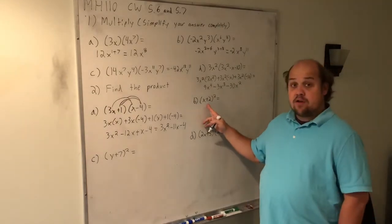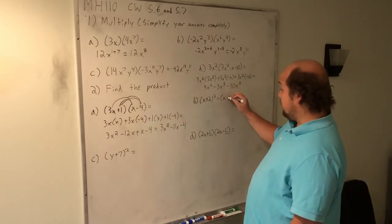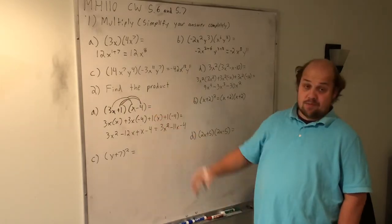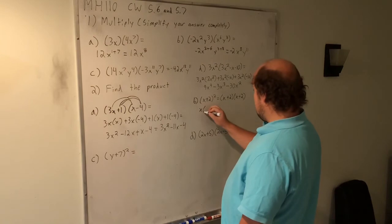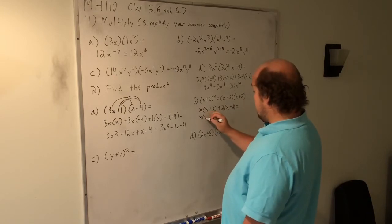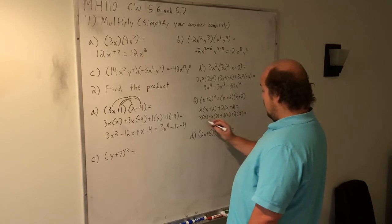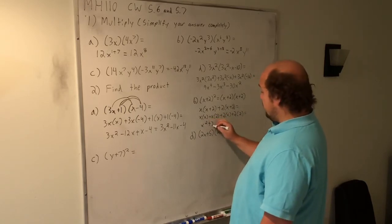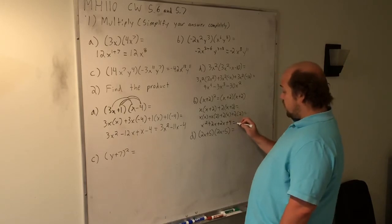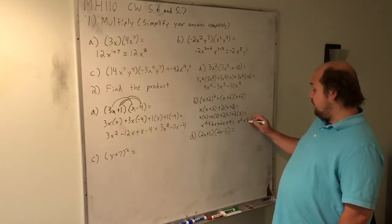When I have this x plus 2 squared, there is a trick in the book, but I'd rather you just see this as x plus 2 times itself. So say that this is really x times the second parentheses plus 2 times the second parentheses, which becomes x times x plus x times 2 plus 2 times x plus 2 times 2. x times x gives me x squared. x times 2 gives me plus 2x. 2 times x gives me plus 2x. And 2 times 2 gives me plus 4. Combining the like terms in the middle, 2x and 2x give me 4x. So I wind up with x squared plus 4x plus 4.